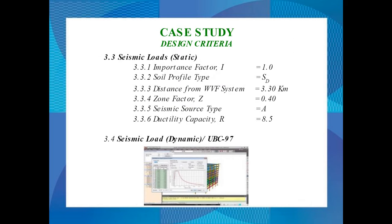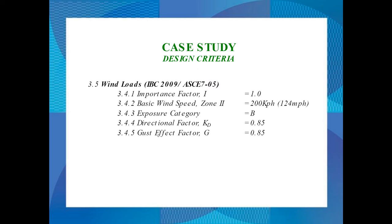For the seismic static load, the key parameter is the distance from the West Valley Fault System at 3.3 km, and the seismic source type is A. For the seismic dynamic load, we use UBC-1997. For the wind load, we use IBC-2009 or ASCE 7-05, with the building in Zone 2, which has a maximum wind velocity of 200 km per hour.